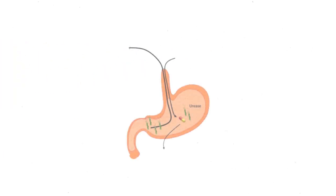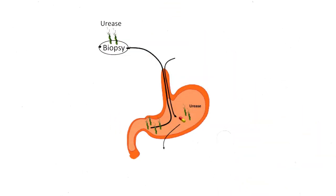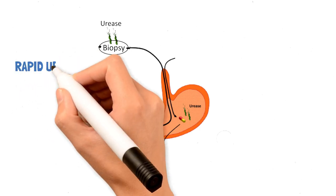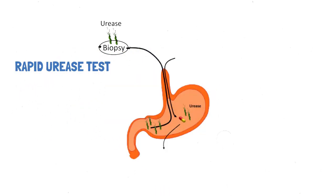Let's talk about the diagnosis. What's the best way to test for H. pylori in the stomach? The gold standard for H. pylori diagnosis is the systemic identification of the bacteria on biopsy specimens. To increase the sensitivity of the test, we can do something called the rapid urease test.